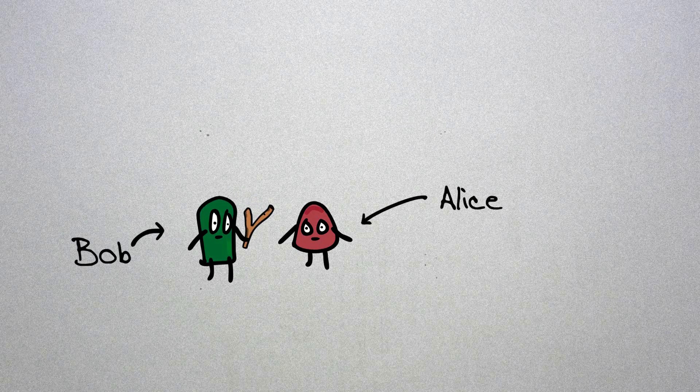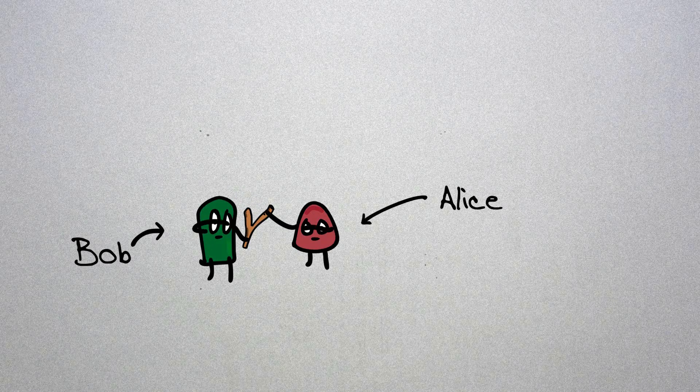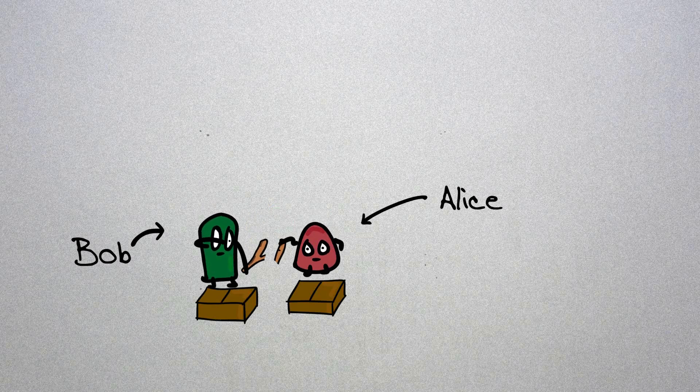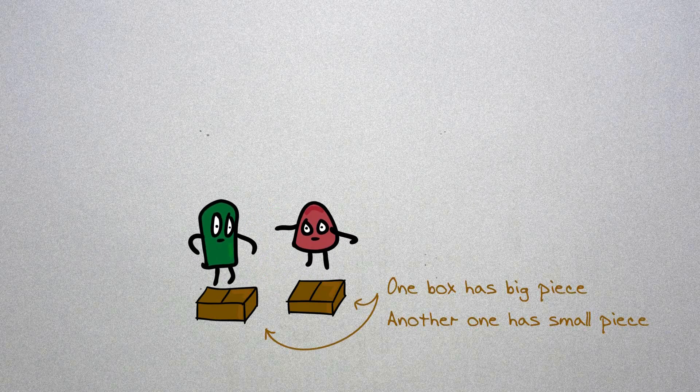Let's say Alice and Bob have this V-shaped stick and then they break it up. They don't look at the pieces, so one would have the big piece and the other one would have the small piece.